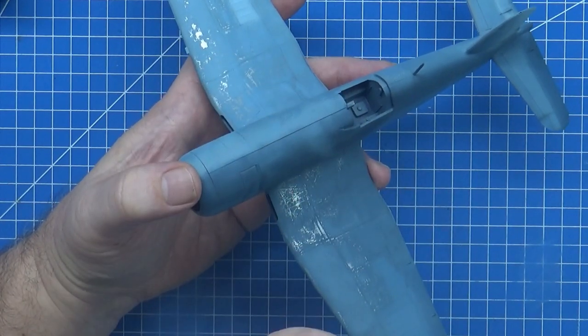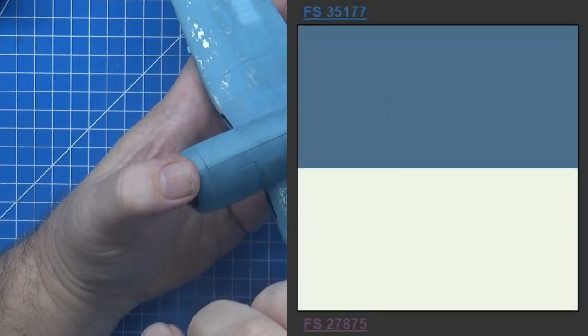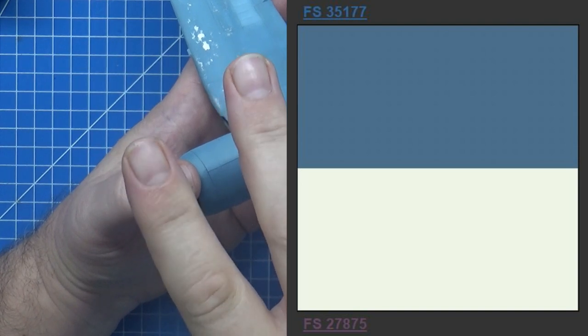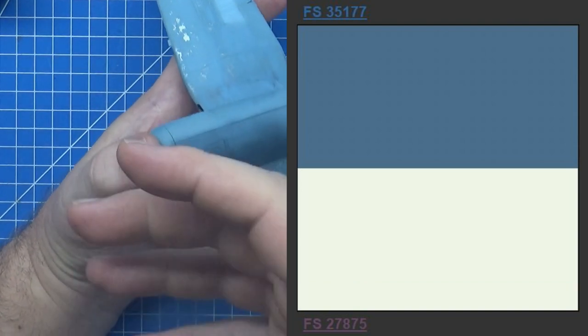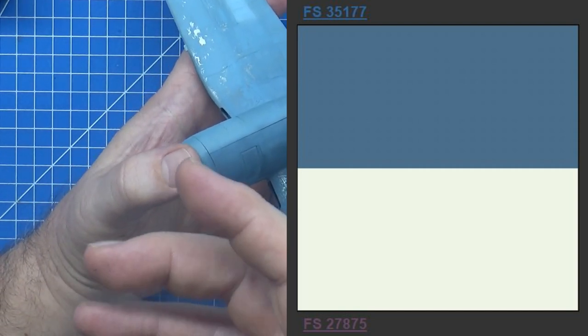I would suggest, if you have a look at the screen cap here of these other two colors, that 35177 blue, which has more saturation, it's richer, it's got a nicer color, and perhaps 27875 as a white, which has a lot less yellow in it, are closer, but not perfect representation of what those historical out of the factory door base colors would be.